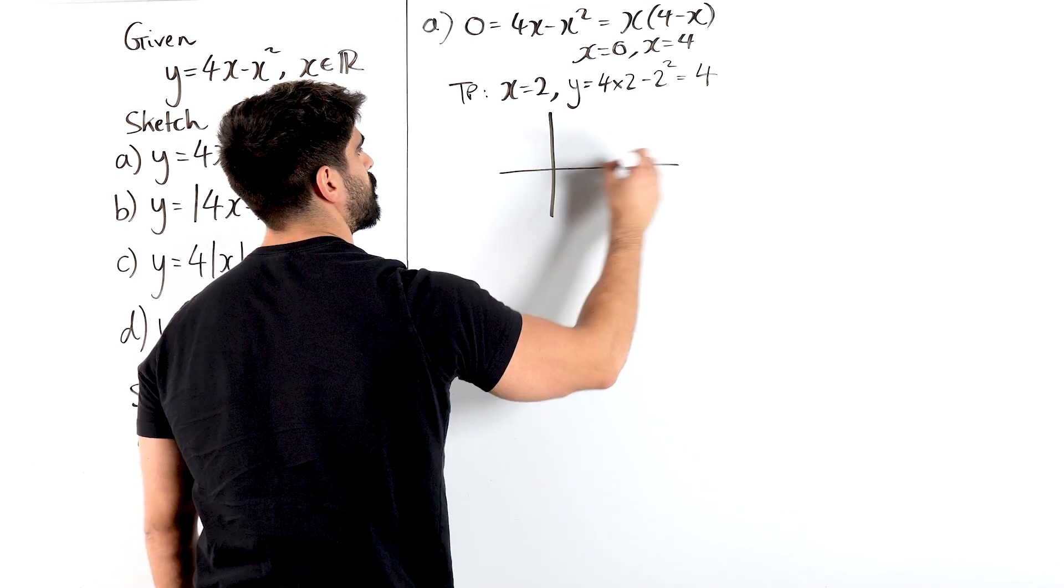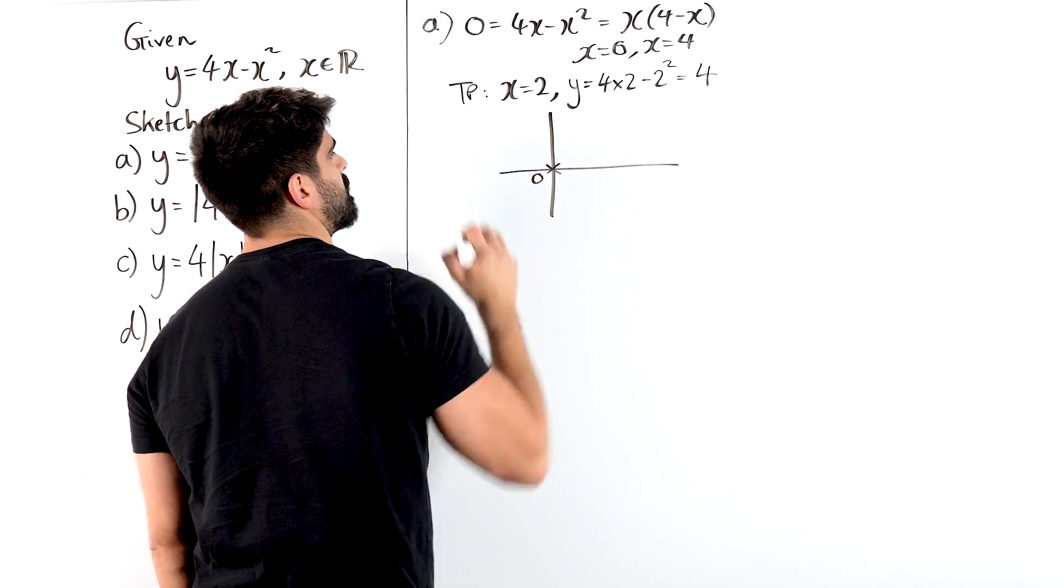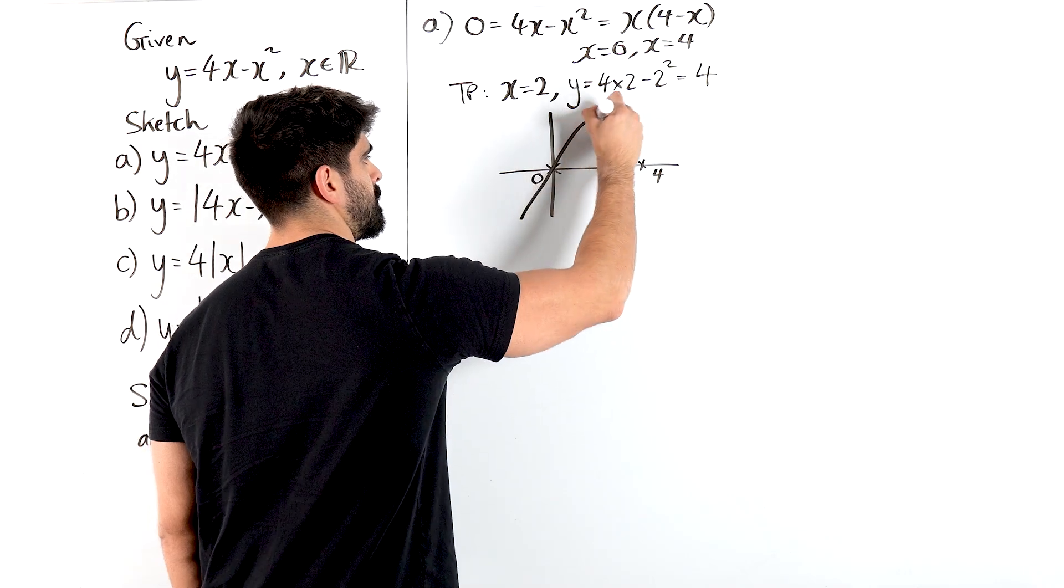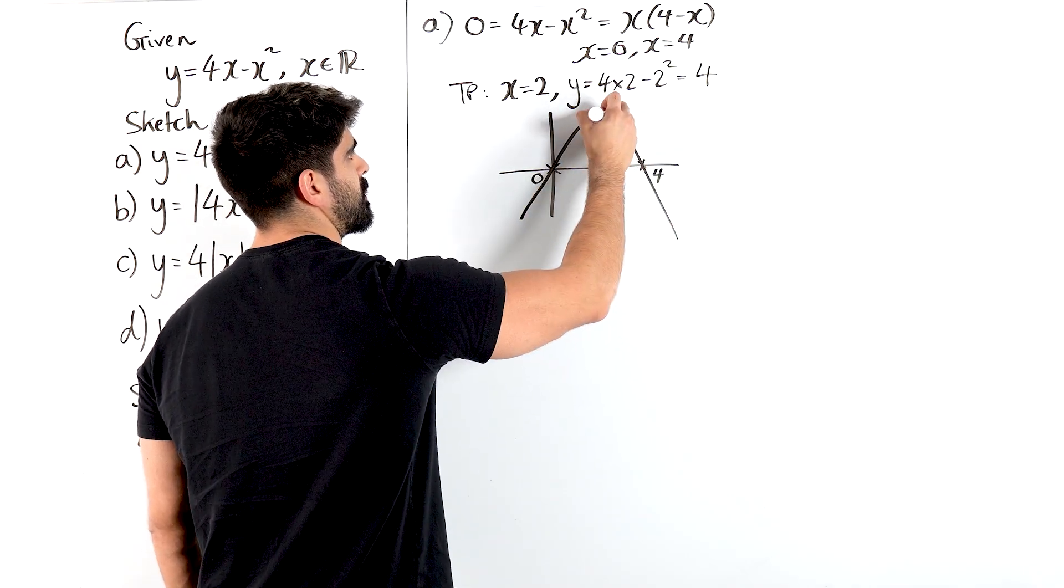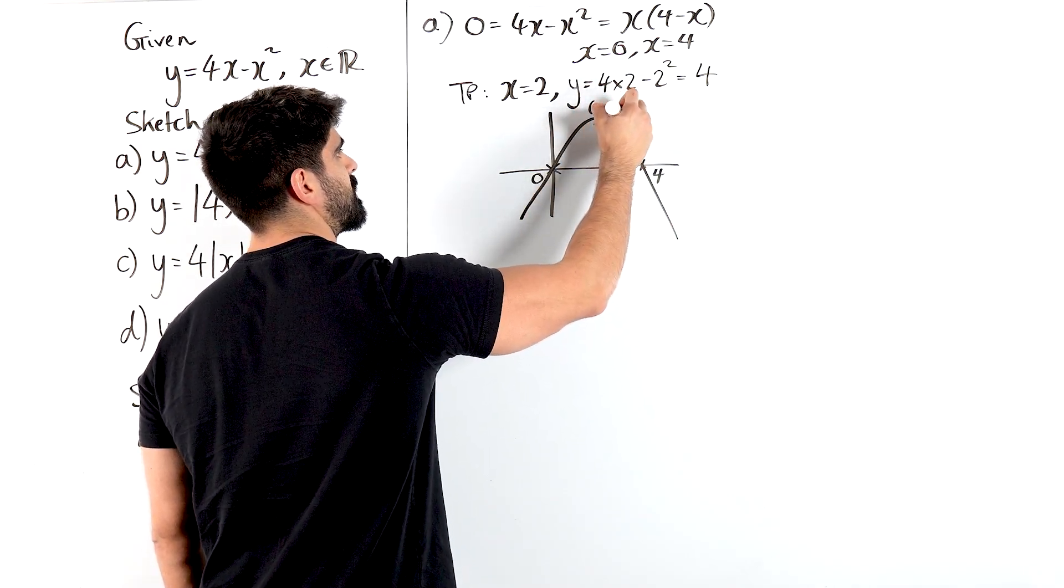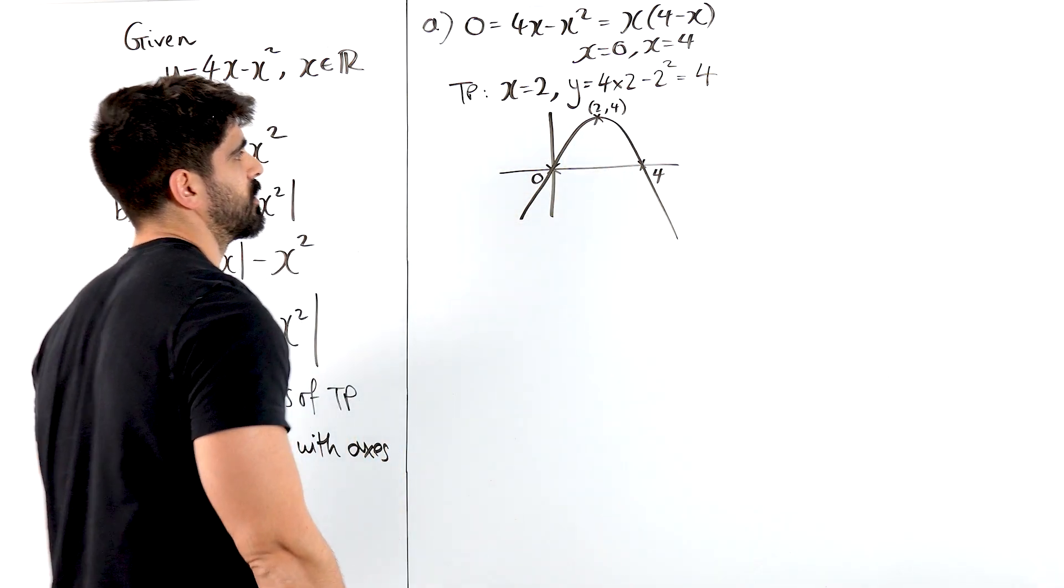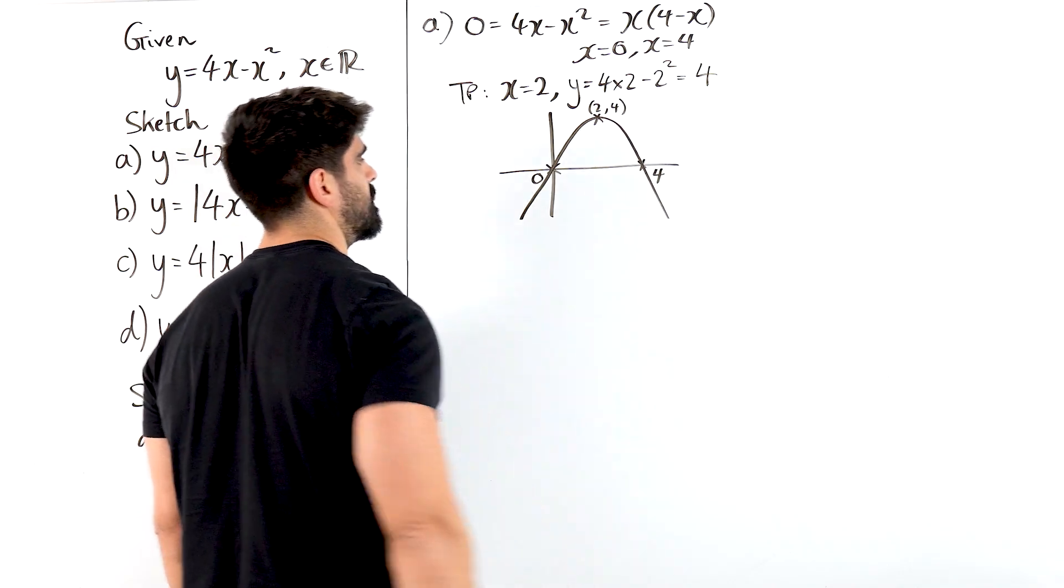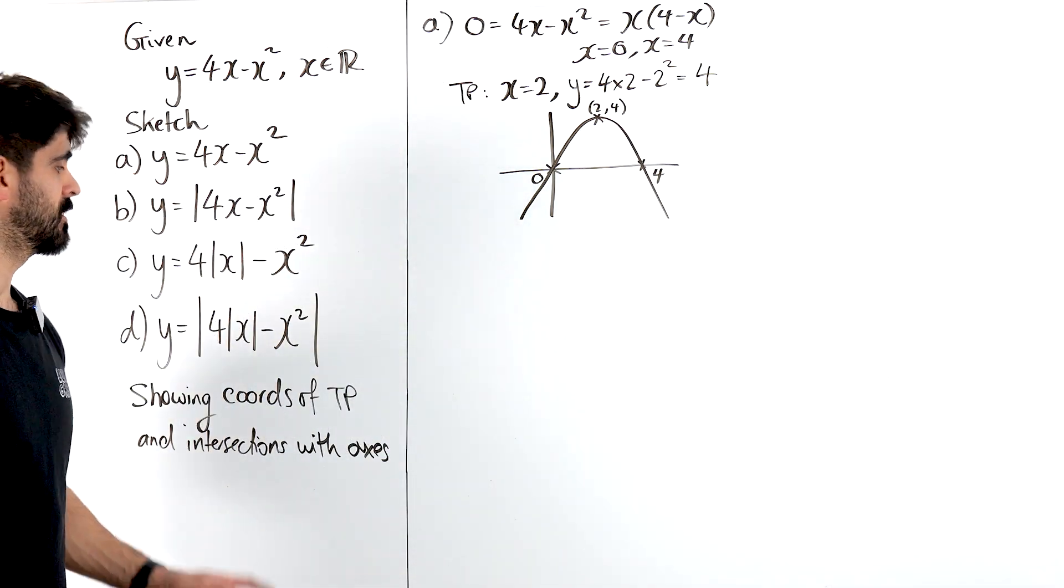So doing our lovely sketch. Yes, crossing there and there. And there we go. It does say in the question to indicate all intersections with the coordinate axes and the turning point.